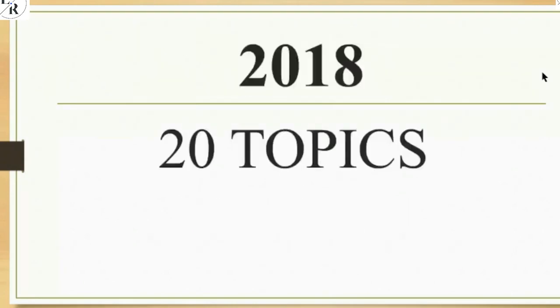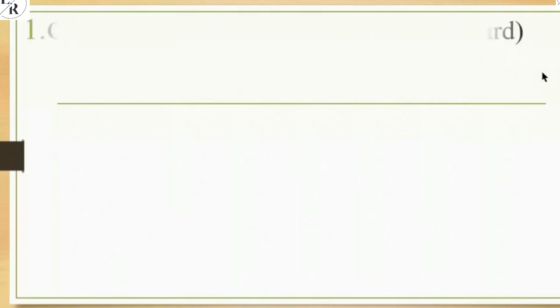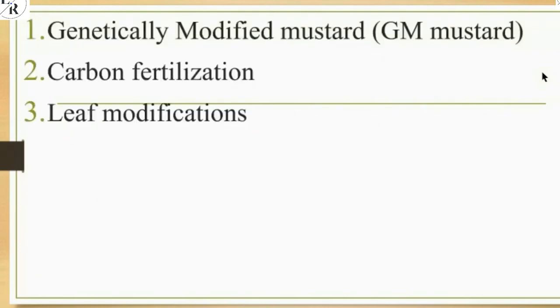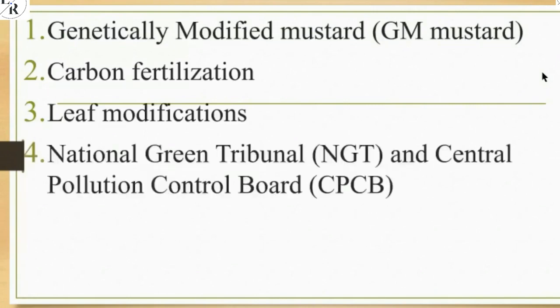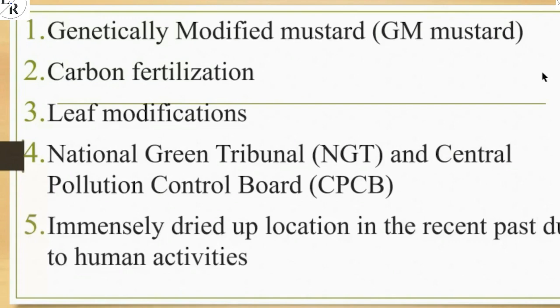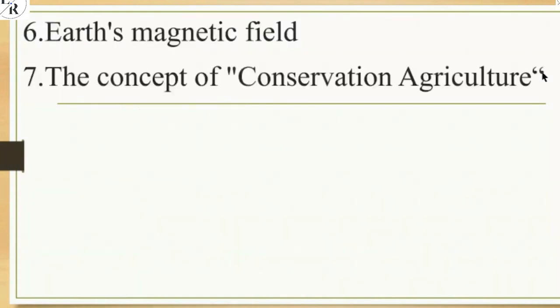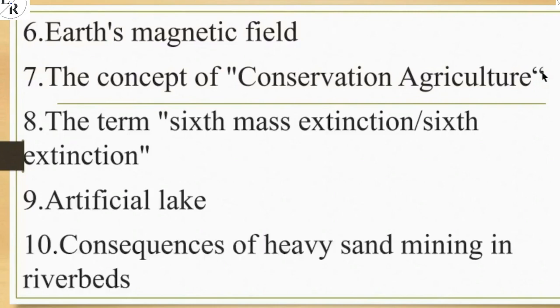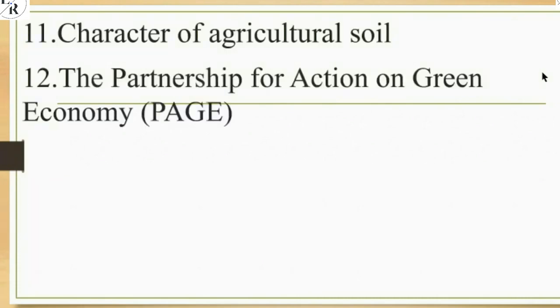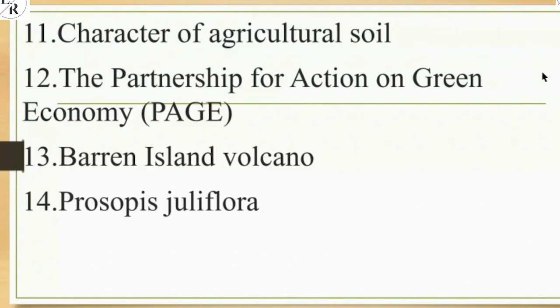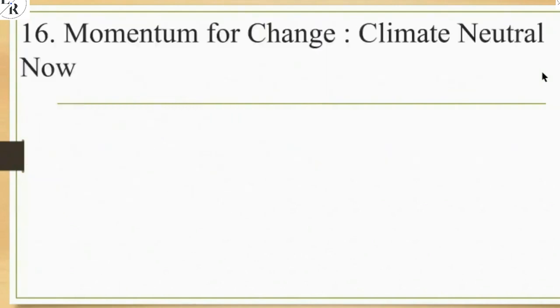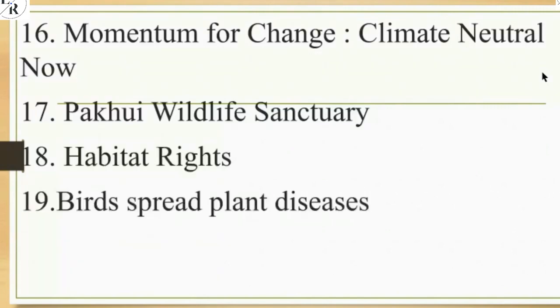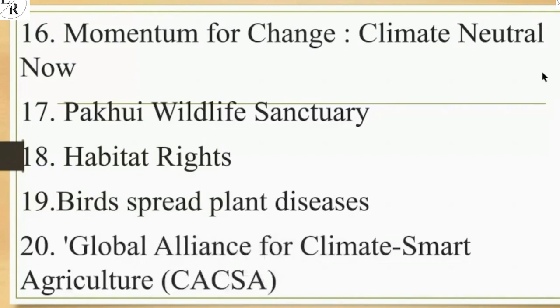When it comes to 2018, UPSC had 20 questions from environment ecology. Topics included: Genetically Modified Mustard, carbon fertilization, life modification, National Green Tribunal and Central Pollution Control Board, locations immensely dried up due to human activities, Earth's magnetic field, concept of conservation agriculture, 6th mass extinction, artificial lakes, consequences of heavy sand mining in riverbeds, characteristics of agricultural soil, Partnership for Action on Green Economy, Barren Island Volcano, cross-species flora, coral reefs, Momentum for Change Climate Neutral Now, Pakhui Wildlife Sanctuary, habitat rights, plant diseases, and Global Alliance for Climate Smart Agriculture.